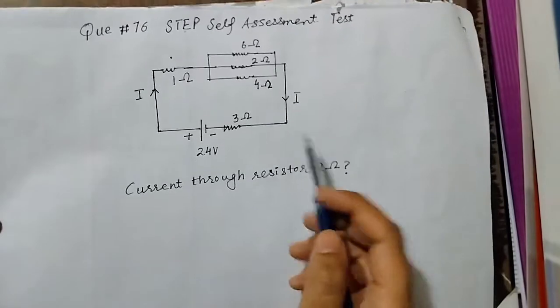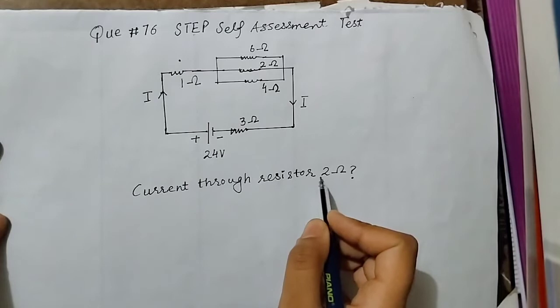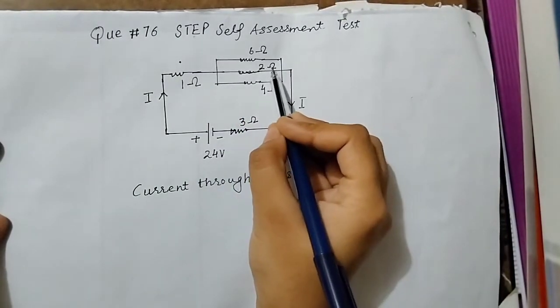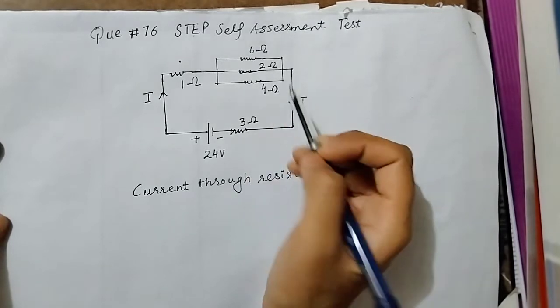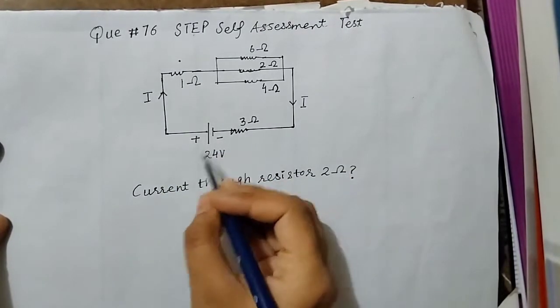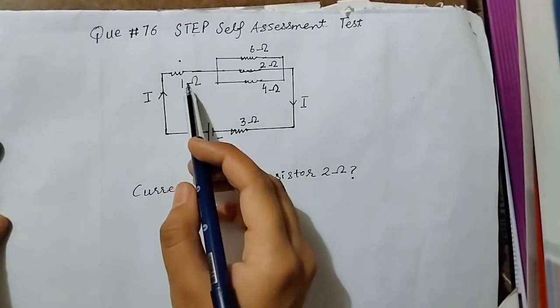In this question you are given a circuit diagram and asked what is the current through the 2-ohm resistor. Now look at the circuit - this is the total voltage, 24 volts, and these are different resistors.